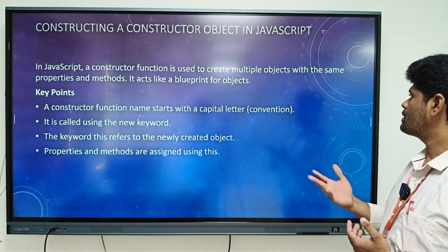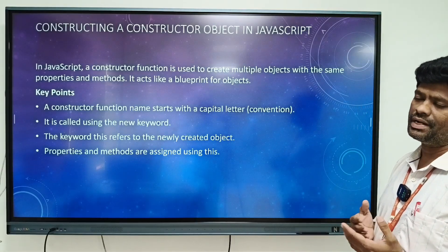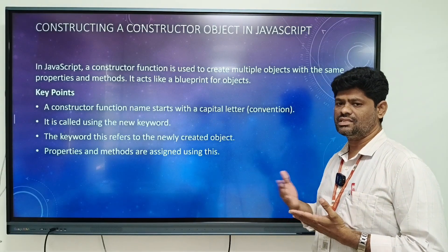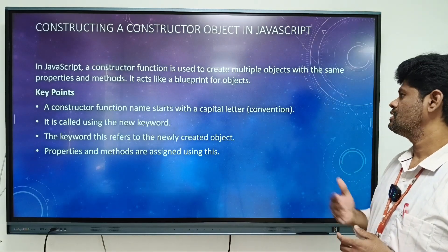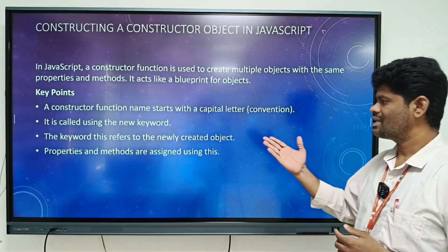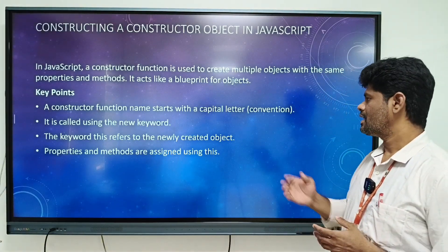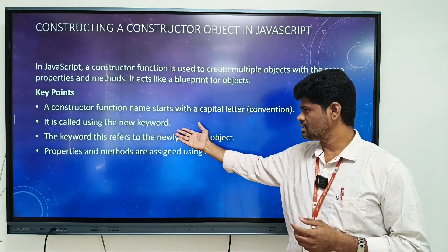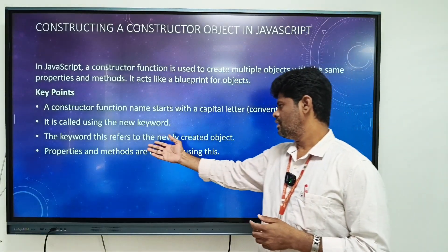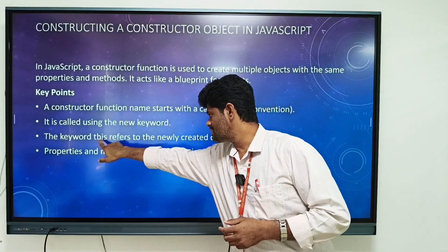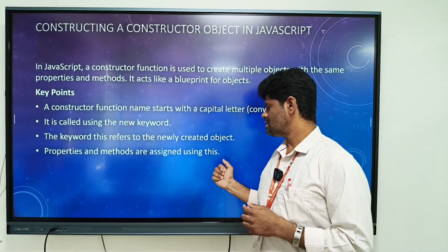The third method is using a constructor function. In JavaScript, a constructor function is used to create multiple objects with the same properties and methods — it acts as a blueprint, similar to a class. Key points of a constructor: the function name starts with a capital letter, it is called using the new keyword, and the 'this' keyword refers to the newly created object. Properties and methods are assigned using 'this'.